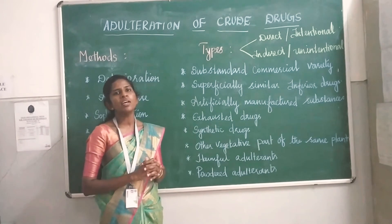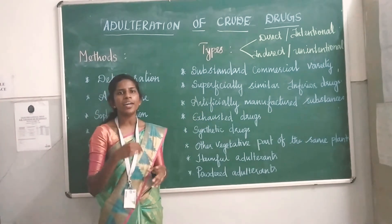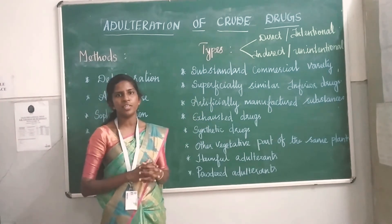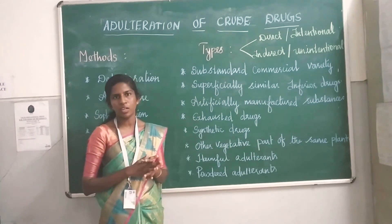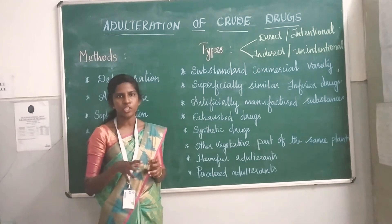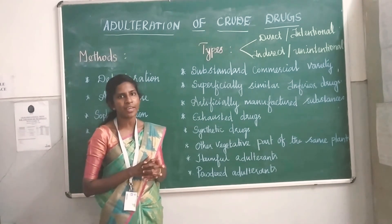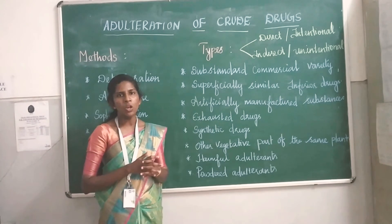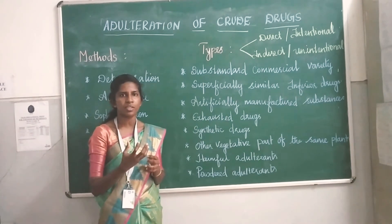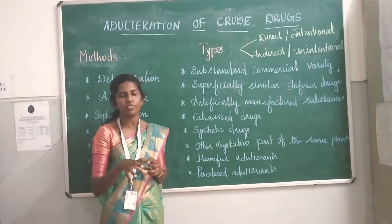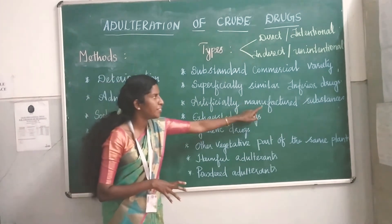The next type is substitution with artificially manufactured substances. People mix original drugs with artificial drugs. For example, instead of using the original natural source, artificially prepared substances colored to resemble the original are used in place of the natural drug.